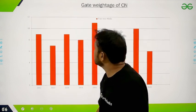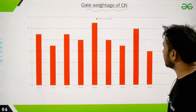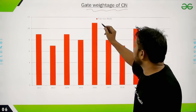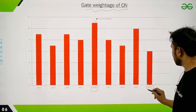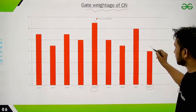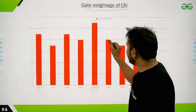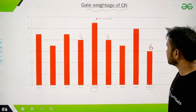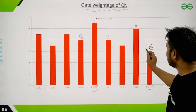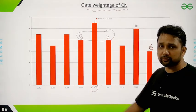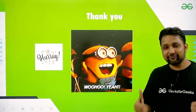This is the GATE weightage for computer networks from the last 9 years. The maximum marks in a single paper was 11 marks in 2016. In 2020, it was 7 marks, and in another year 6 marks. On average, around 8 marks of questions come from computer networks every year. That's it for this lecture. Thank you.